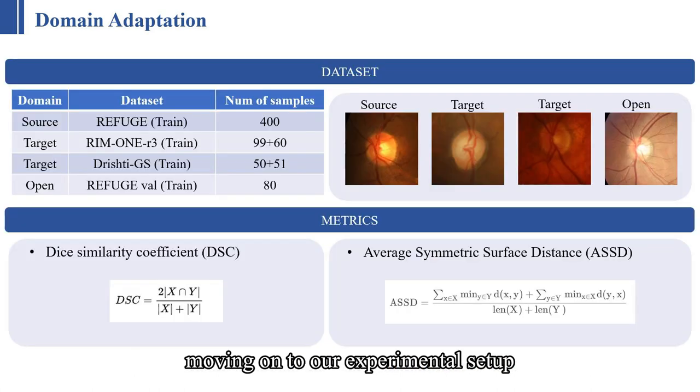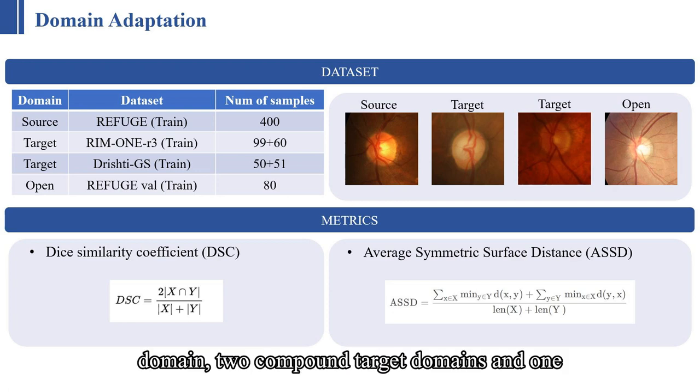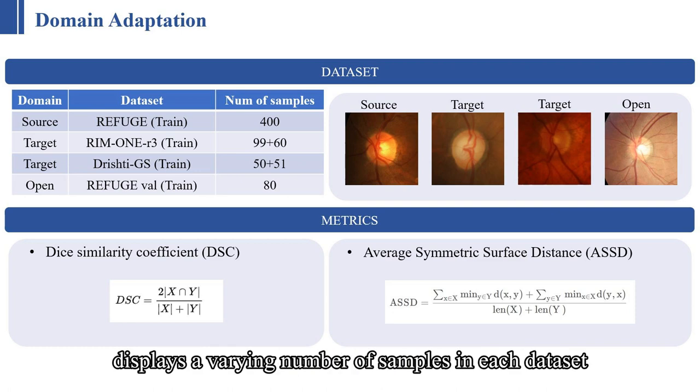Moving on to our experimental setup, we employed four distinct datasets, characterizing them into one source domain, two compound target domains, and one open domain. The last column displays a varying number of samples in each dataset.